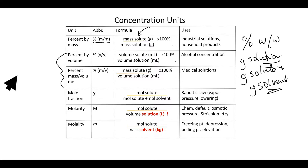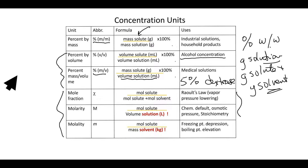Percent by volume is used for alcohol content — you'd see it in wine. Percent mass to volume is used, for example, in a 5% dextrose solution in a hospital; that would be grams of solute over the volume of the total solution in milliliters.